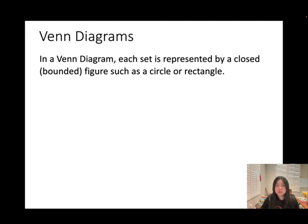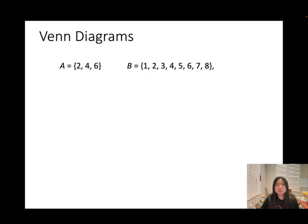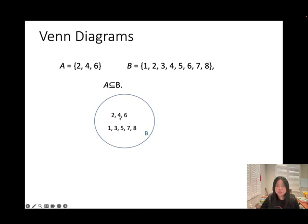In Venn diagrams, each set is represented by a closed bounded figure such as a circle or rectangle. If P is a subset of Q, you can find all elements of set P within Q. For example, since A is a subset of B, we draw a big circle for set B containing all the numbers, with a smaller circle inside for set A containing {2, 4, 6}.